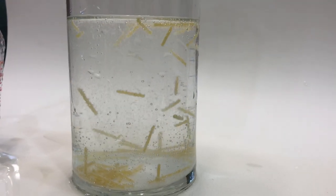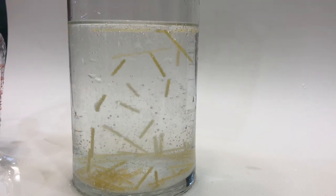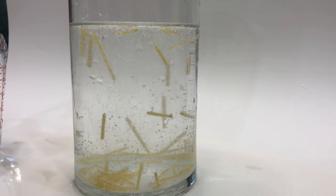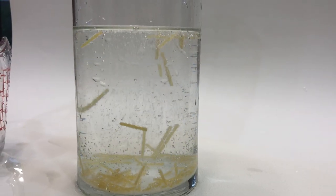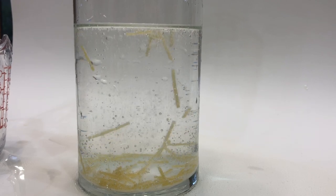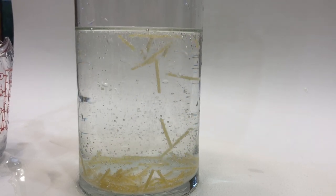And when spaghetti is placed in the baking soda and vinegar, it will rise to the surface due to the CO2 carbon dioxide gas that adheres to it. When the spaghetti reaches the surface of the water, then the gas bubbles pop and the spaghetti sinks again.